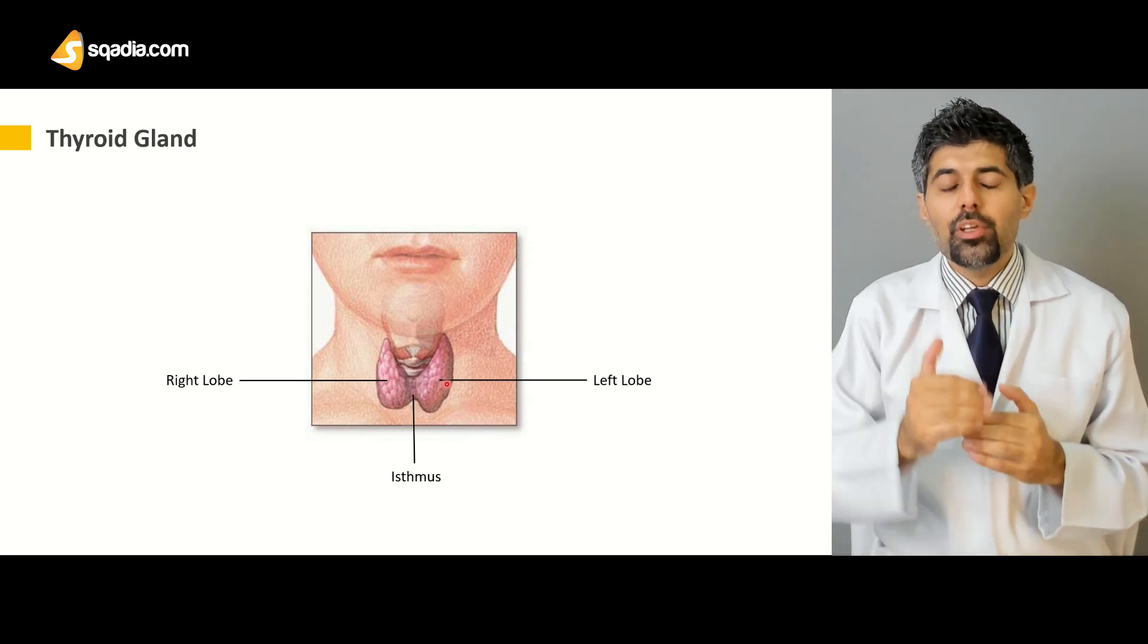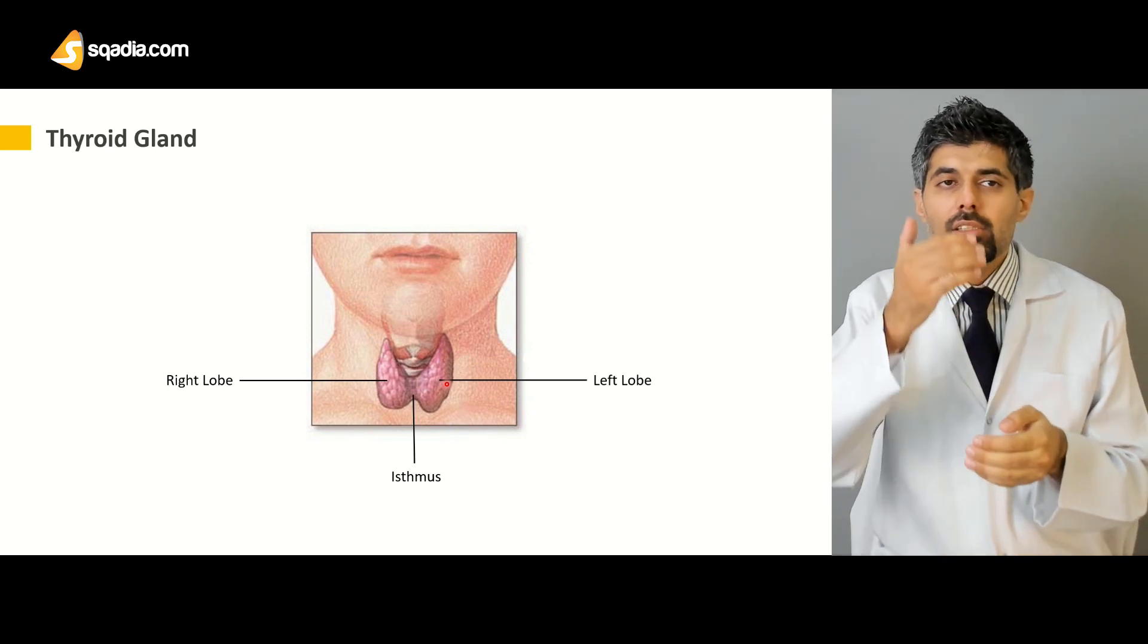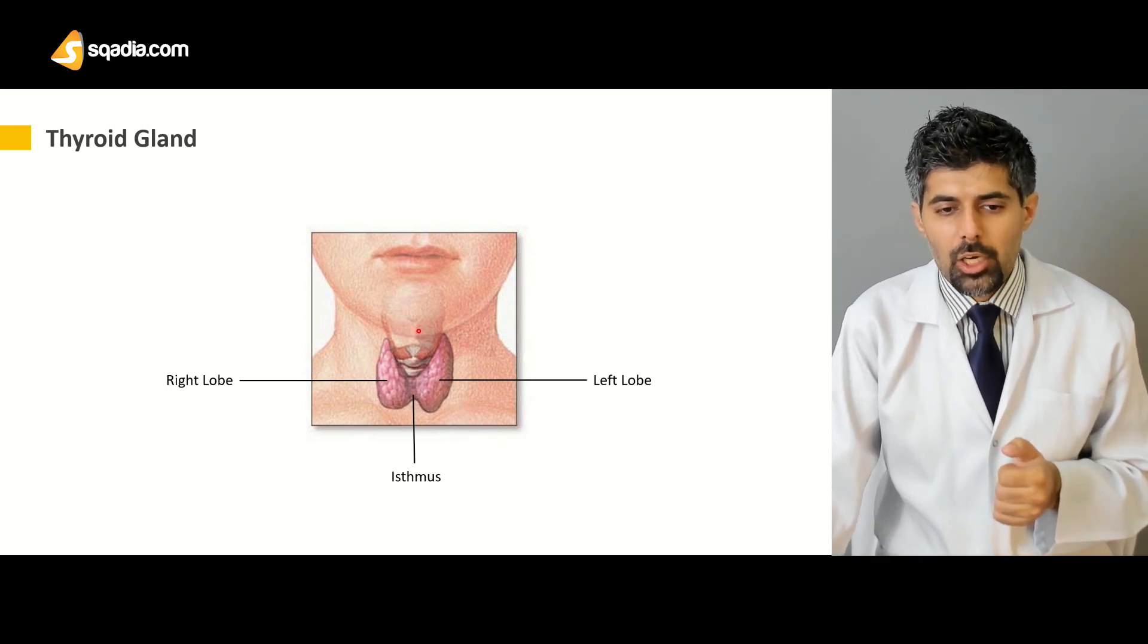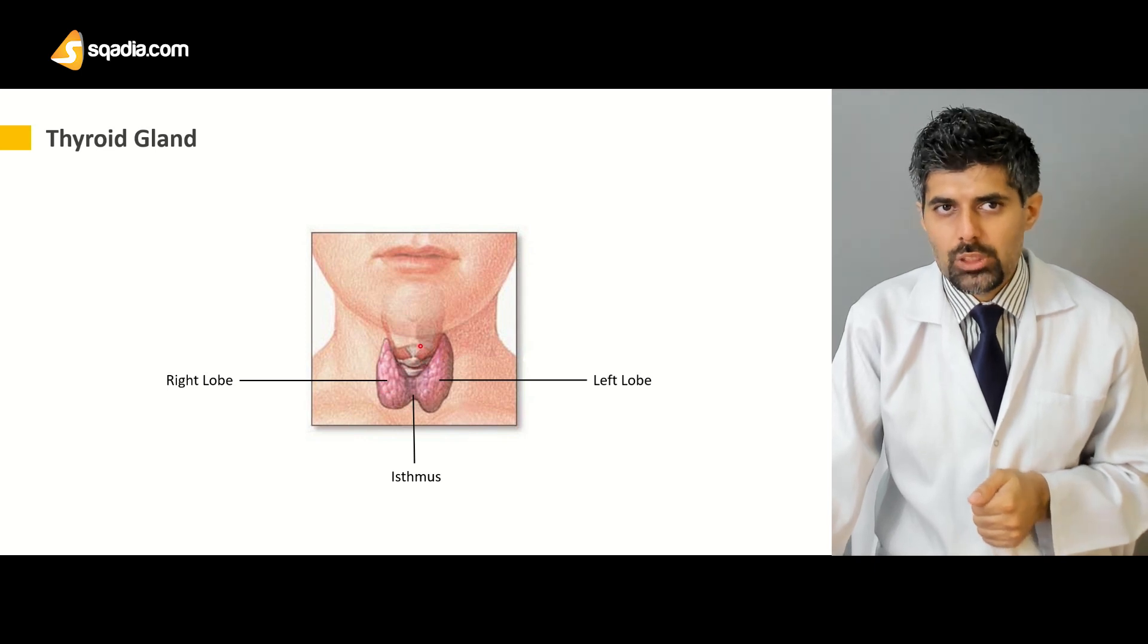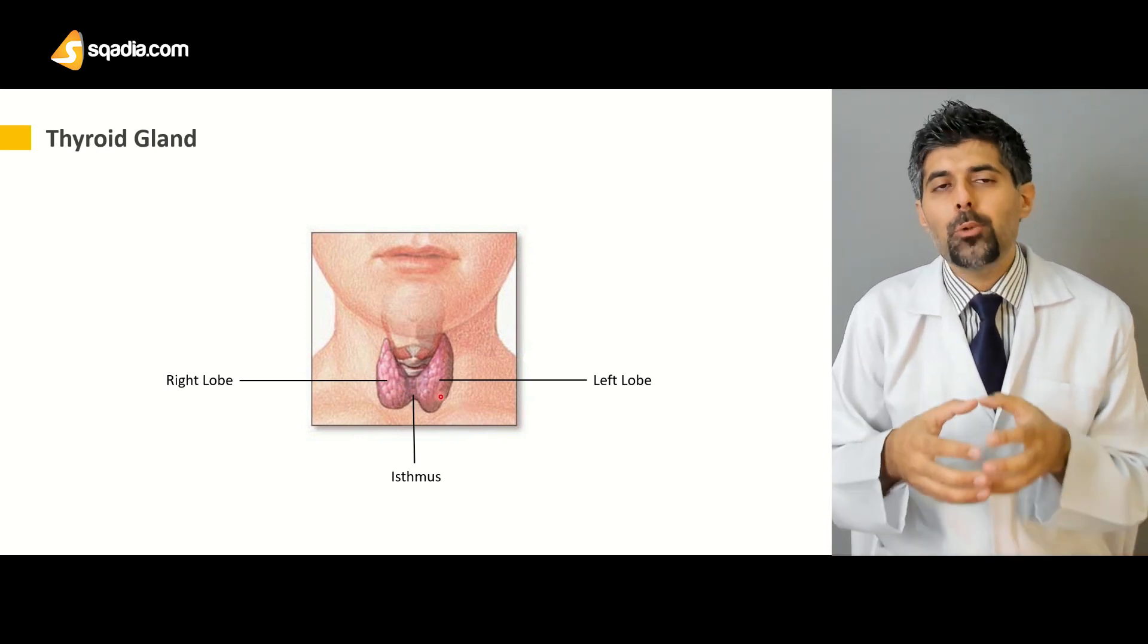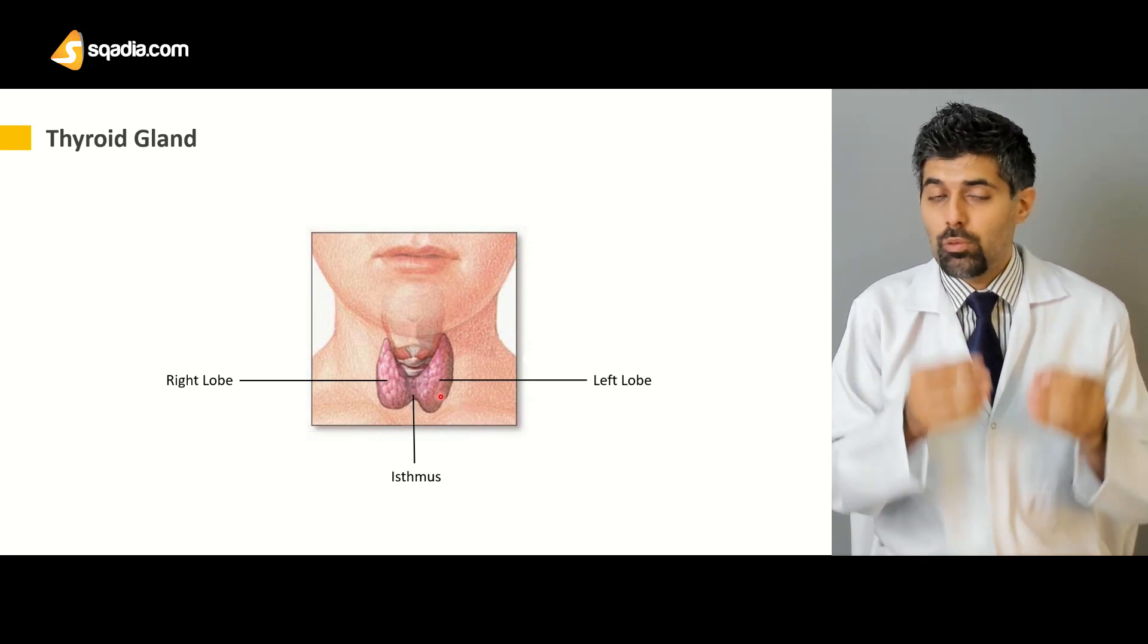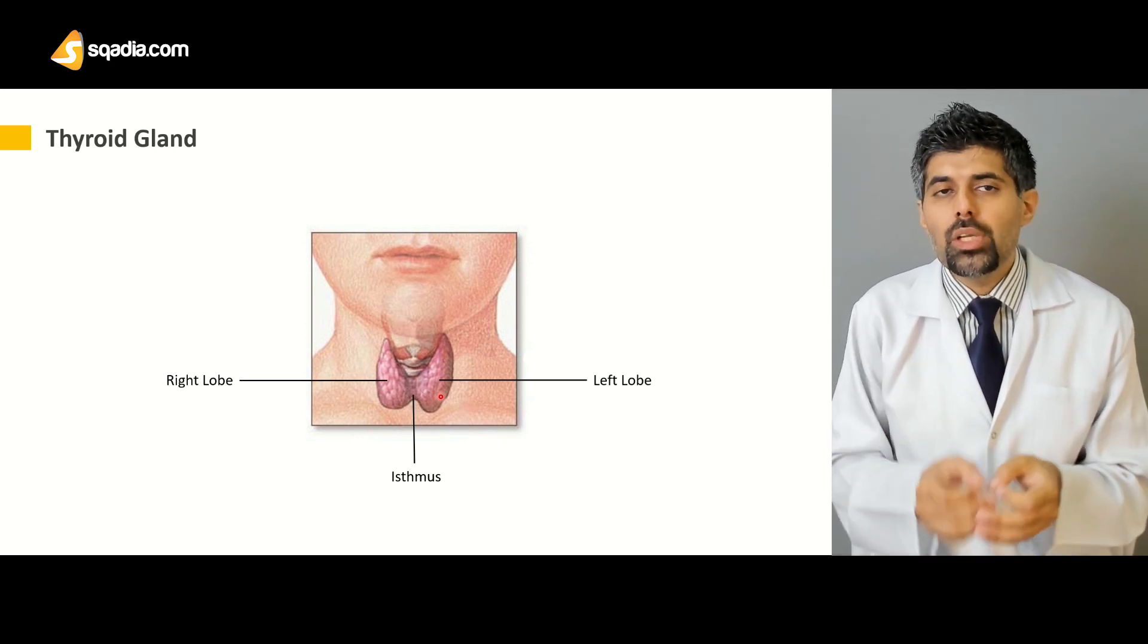It lies inferiorly to both the hyoid bone and the thyroid cartilage, and it is anterior to the cricoid cartilage. Here is the thyroid cartilage while this is the cricoid cartilage. The thyroid gland is divided into two lobes: the right lobe and the larger left lobe. Both of these lobes are joined together via a thin band of tissue known as the isthmus or the bridge between both lobes.